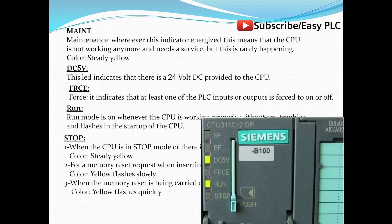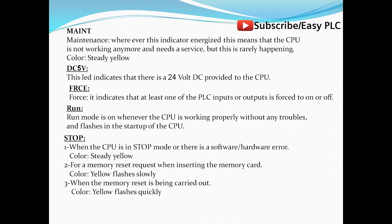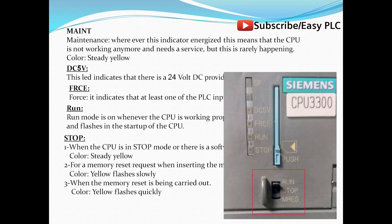Run: Run mode is on whenever the CPU is working properly without any troubles, and it flashes during the startup of the CPU. Stop: The Stop LED is on when the CPU is in stop mode or when there is a software or hardware error. It blinks when inserting the memory card or when a memory reset is being carried out.